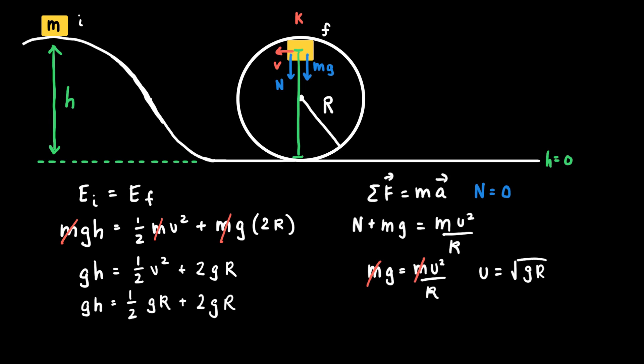The next thing that I'll do is I'll notice that there is a g in every term of the equation, which cancels. And so this could be written as h equals one-half r plus 2r.